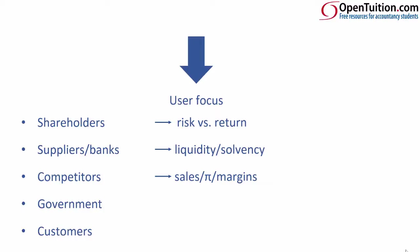The government wants to tax your entity, so they will be focusing on your profits and whether they are reported correctly. But they might also want to think about non-financial factors such as job creation — that's something you need to think about above the numerical analysis, thinking more along the lines of non-financial factors as opposed to just financial factors. The last user group is customers. You are a customer of OpenTuition, and what customers are looking for is the quality of service provided.